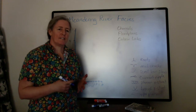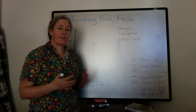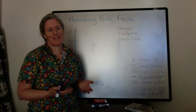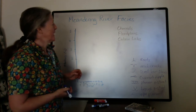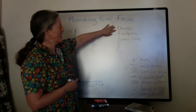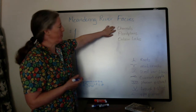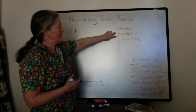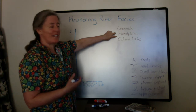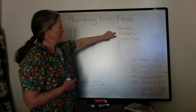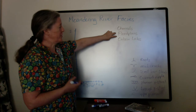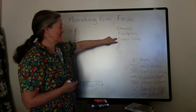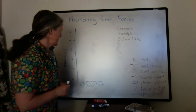Meandering river facies contain three components that combine together and make up the typical deposits associated with meandering rivers. They are the channel deposits where you have the more rapid flow, the flood plains that represent low flow and a lot of biological activity, and the oxbow lakes that form in these abandoned meandering channels.